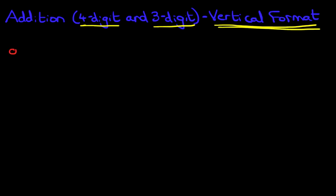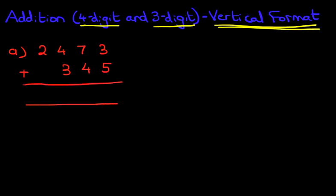Right, let's begin with our first example. Okay, that's our question. We have 2473 plus 345. Let's label the columns. We've got units, tens, hundreds, and thousands.